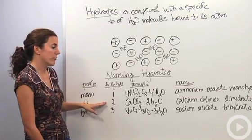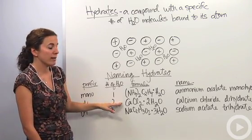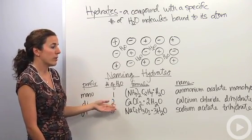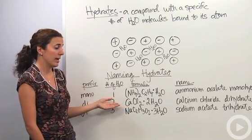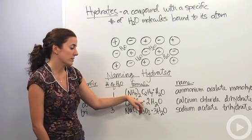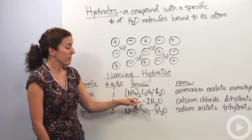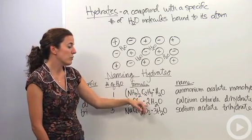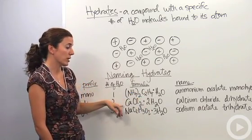If you had two for every salt, for example, calcium chloride, you would say the same thing, calcium chloride, instead of mono, you'd say di, dihydrate, and you'd represent that by this little dot here, which does not mean multiply. This little dot tells us we just have two for every one of these within the structure.